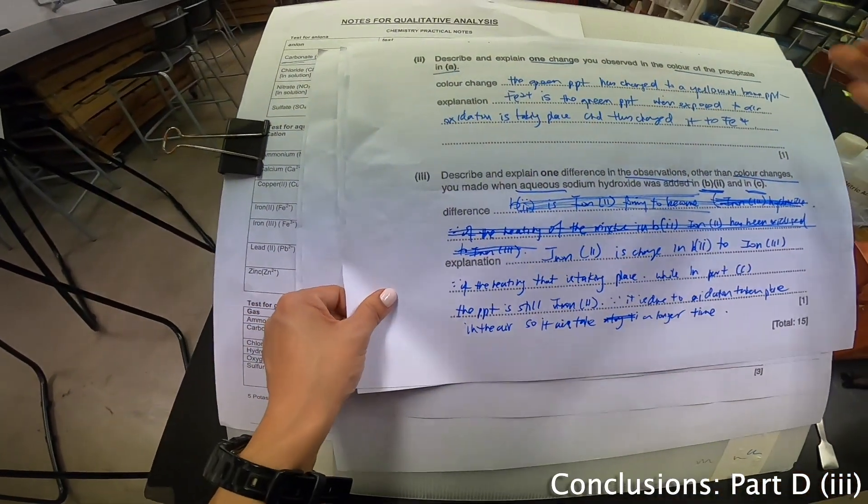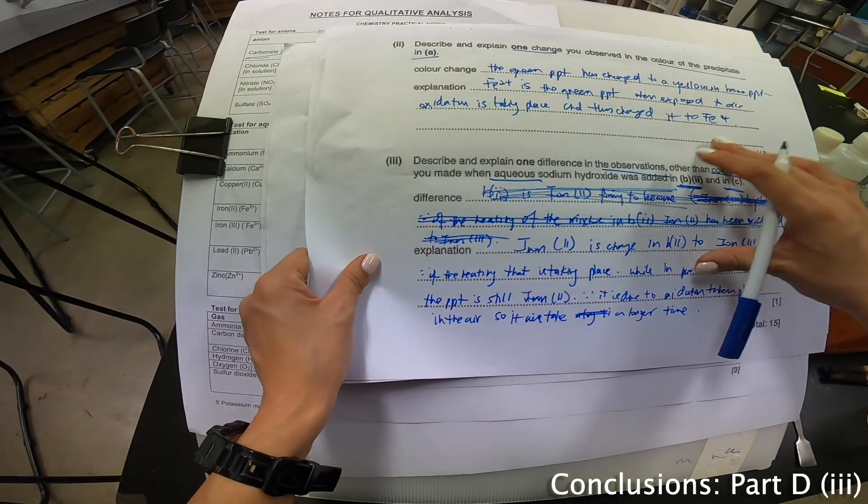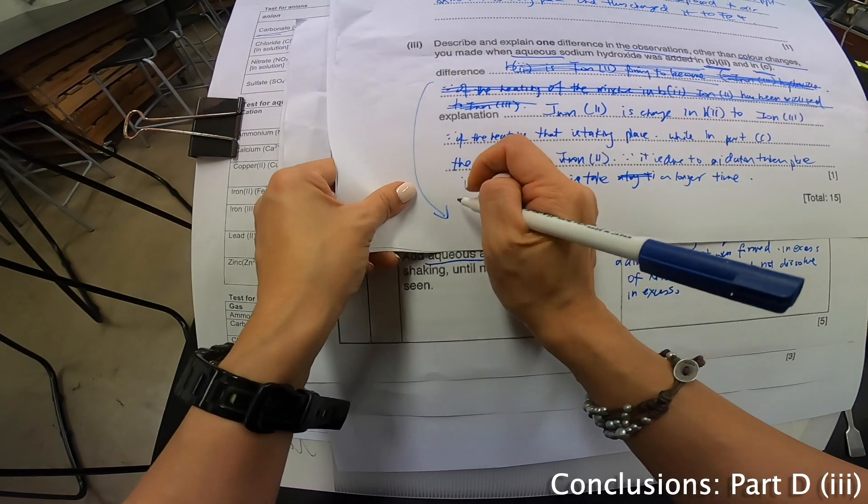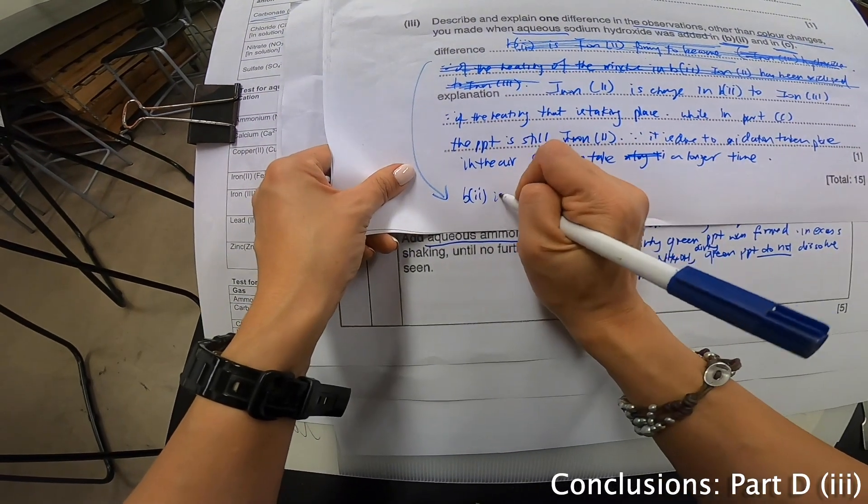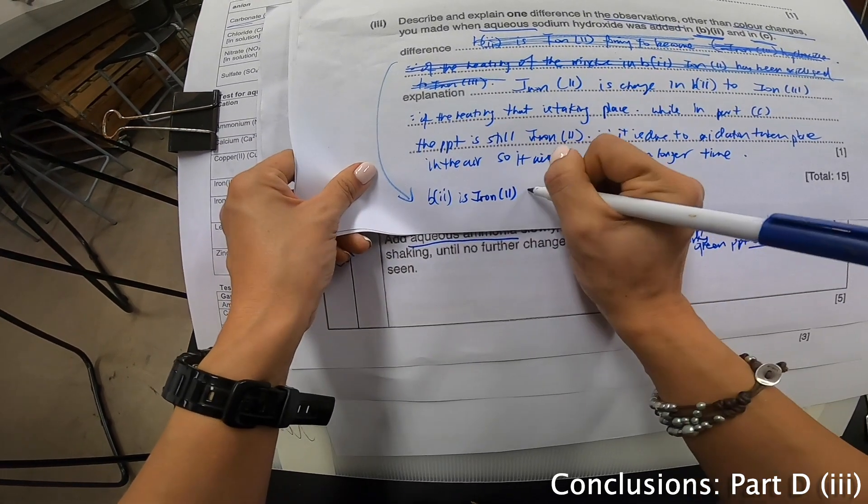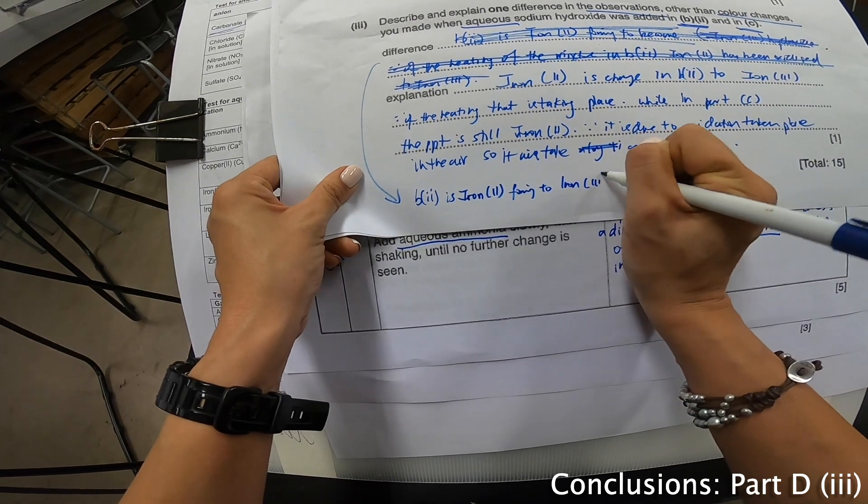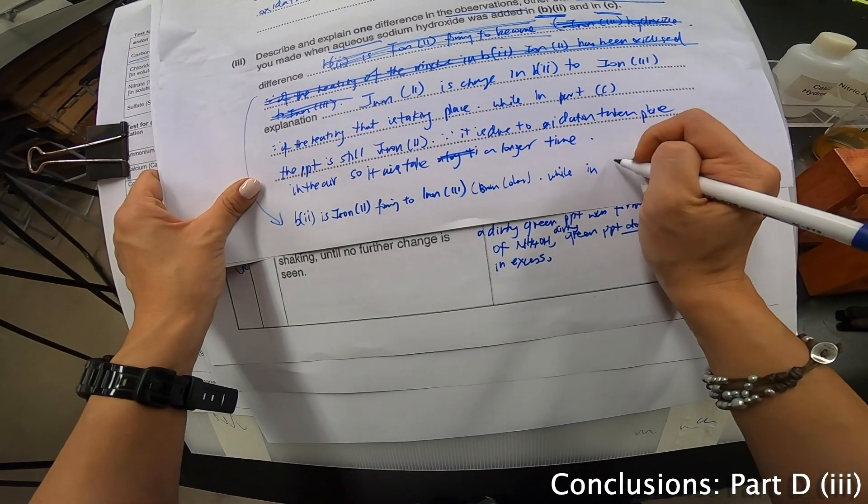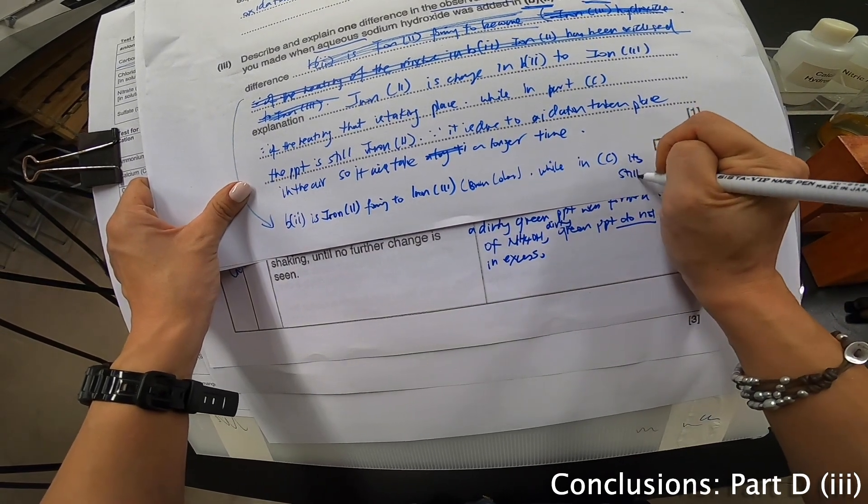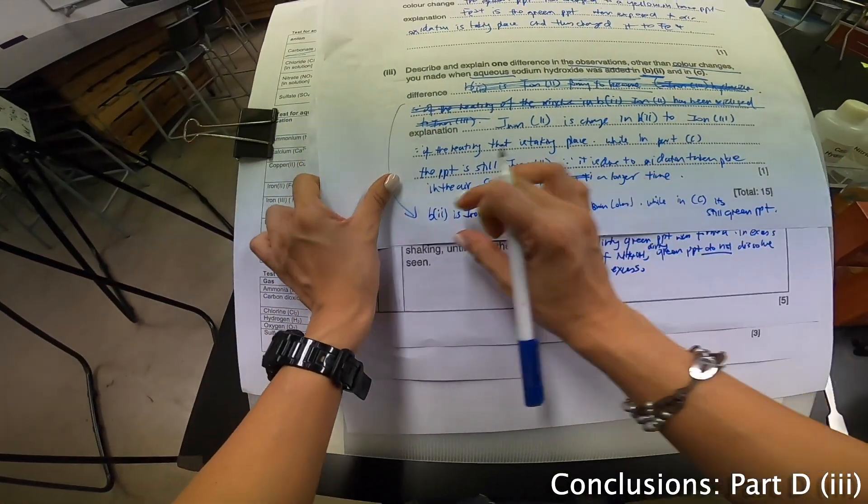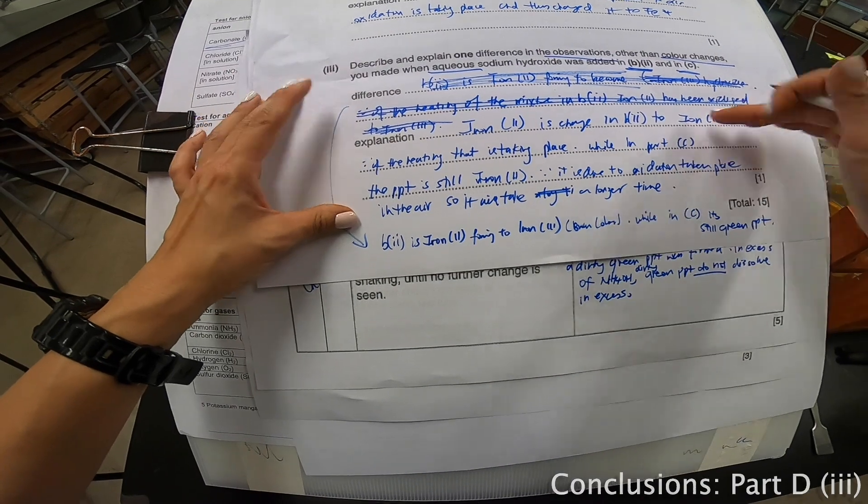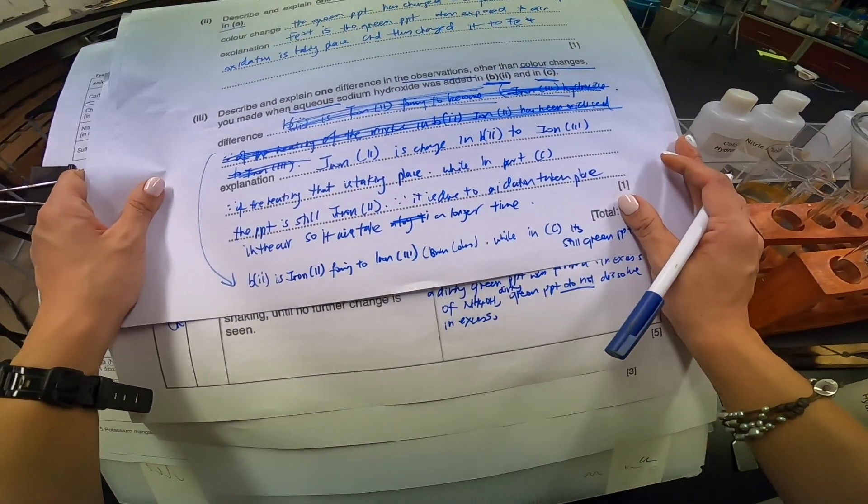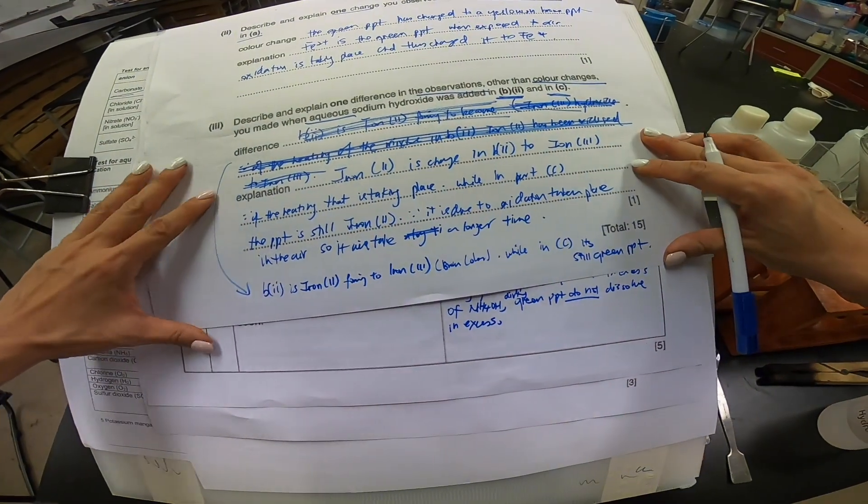I'm not going to redo this video because I want to show that there's a chance that you will make such a mistake like me in exam. So, if it's an exam, I will do this. I will draw a line and write down over at this part B part 2 is iron 2 forming to iron 3 plus the brown color while in C, it's still a green PPT. So, this is the part, the difference. The explanation is here. So, in exam, I know that it looks a little bit messy and untidy but because time is running up, I want to show you that it's possible to finish within this timing.